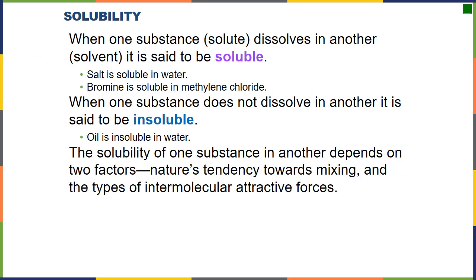We're going to look at some definitions here. We want to consider soluble and insoluble. When a solute dissolves into a solvent, we say it is soluble. Salt, for example, is soluble in water. Bromine, which is nonpolar, is soluble in methylene chloride, which is a nonpolar solvent. If something does not dissolve in a solvent, it's said to be insoluble.